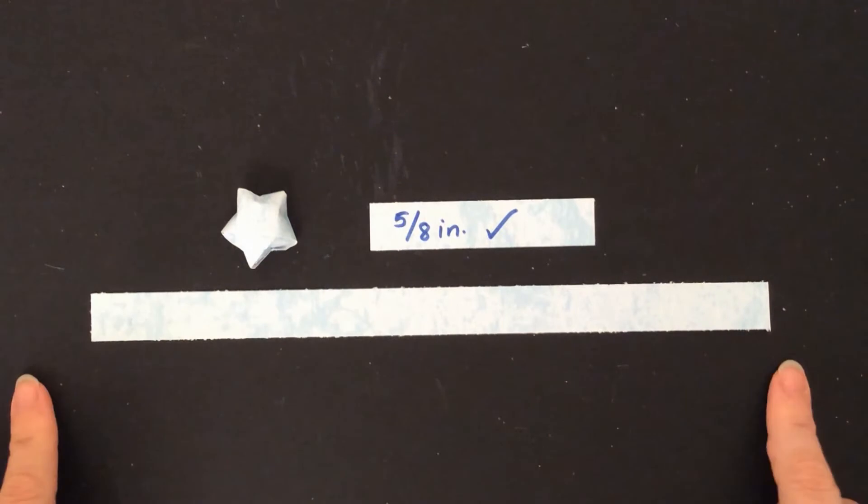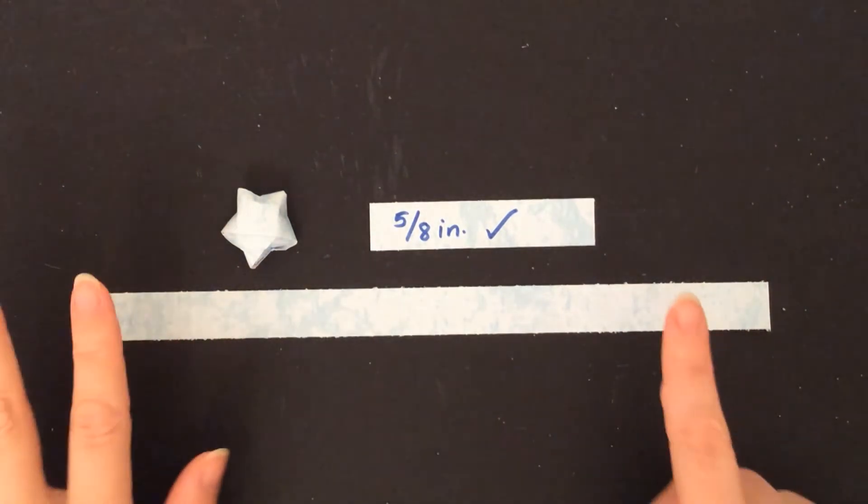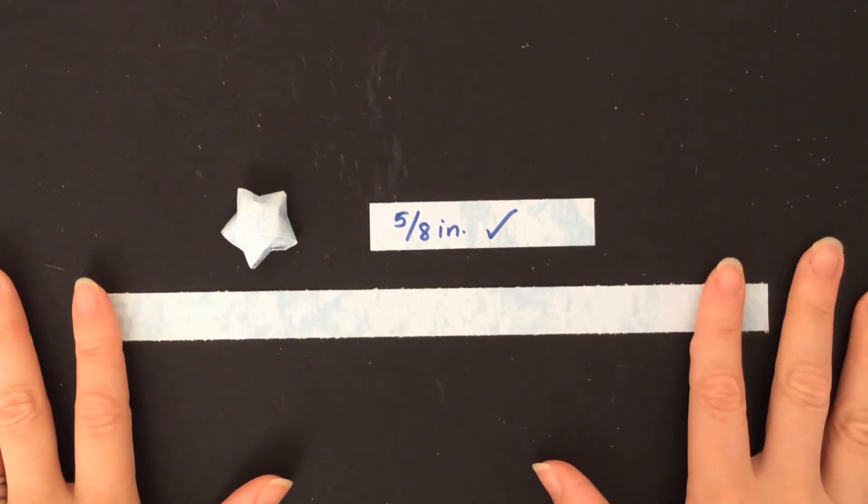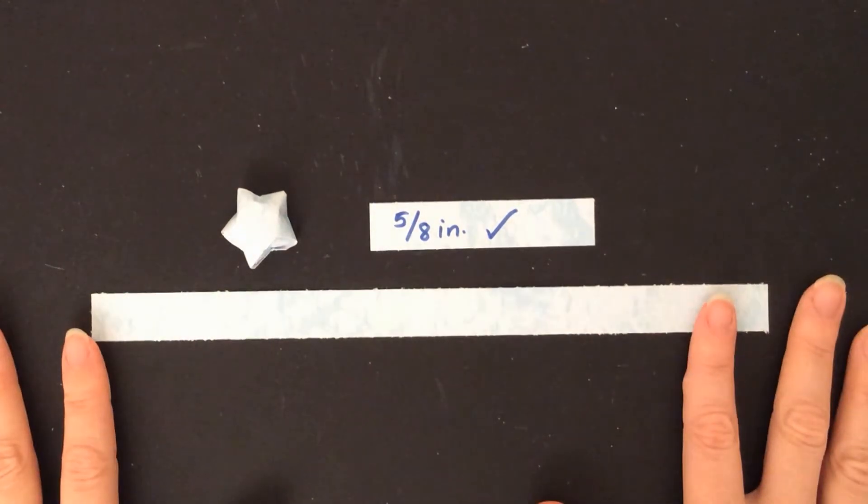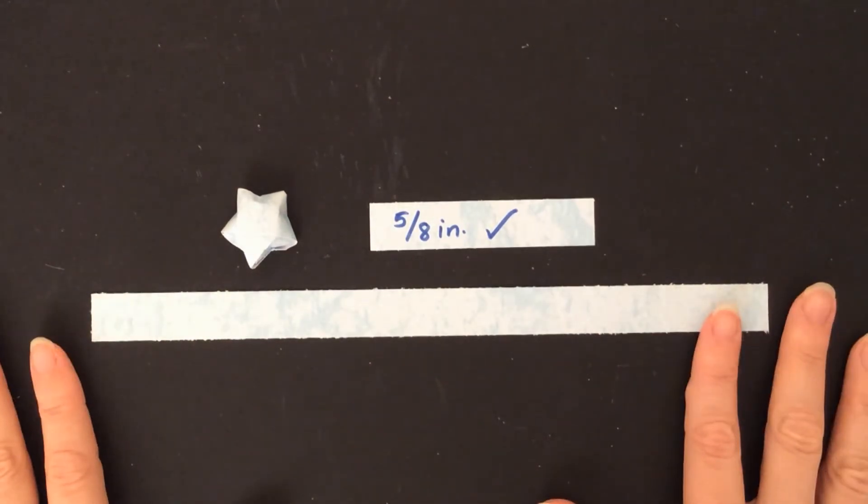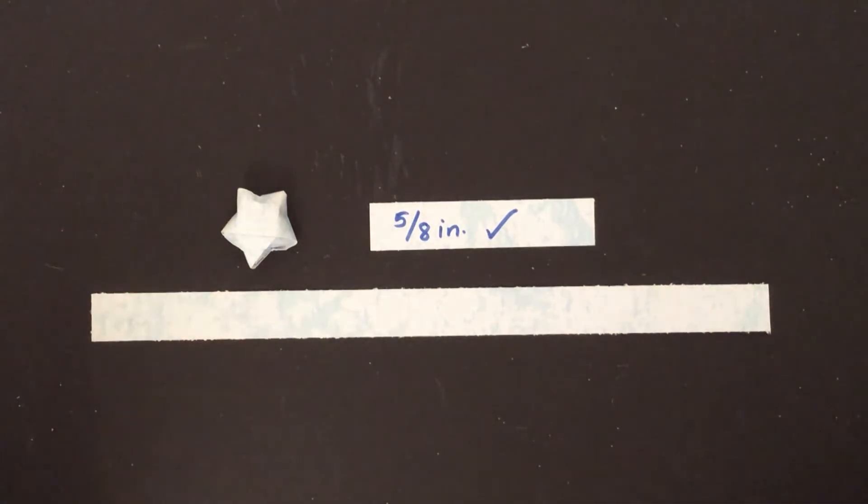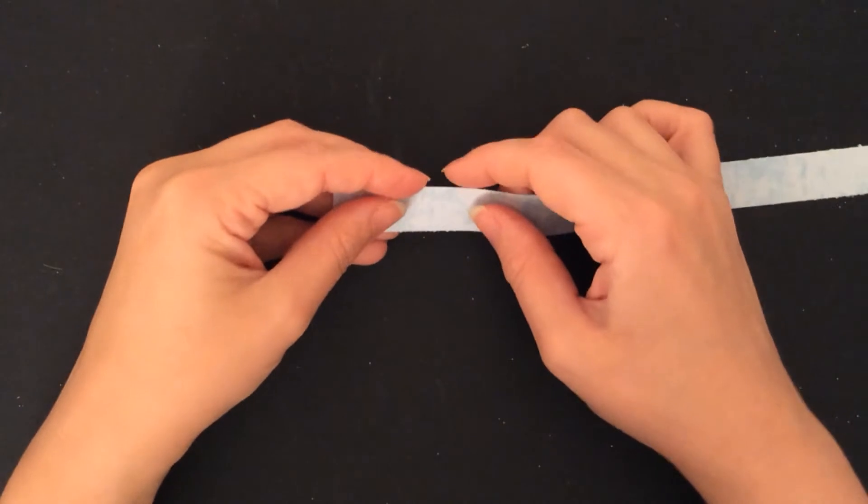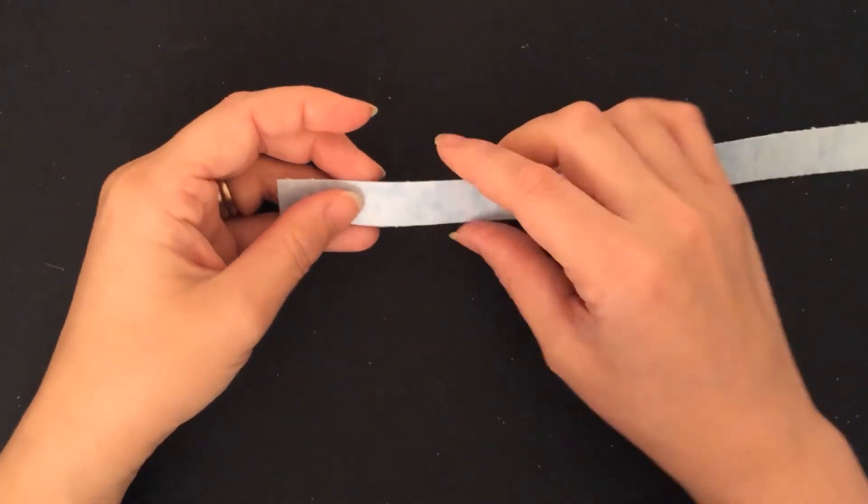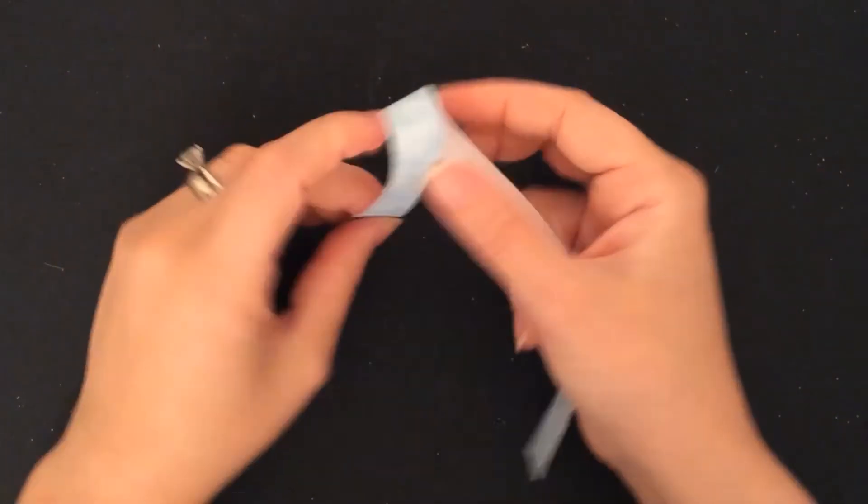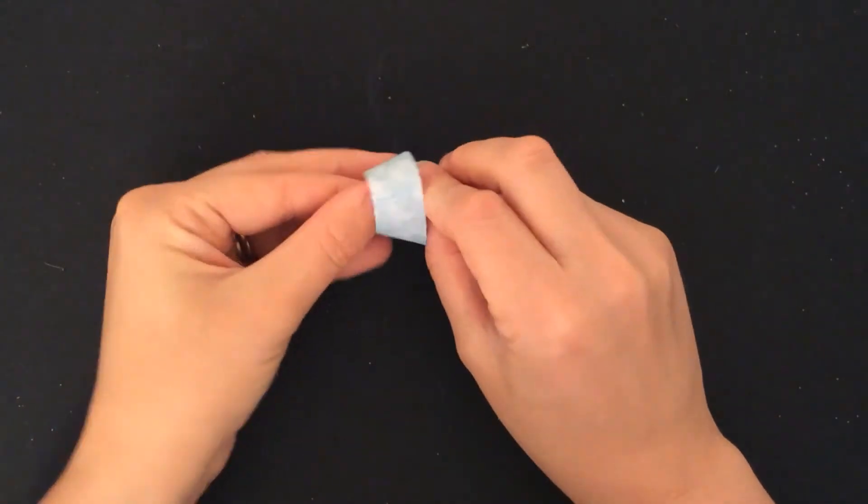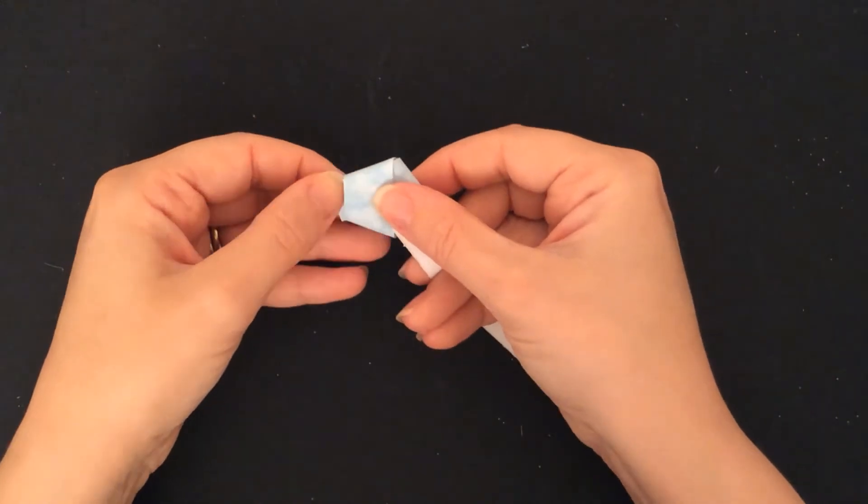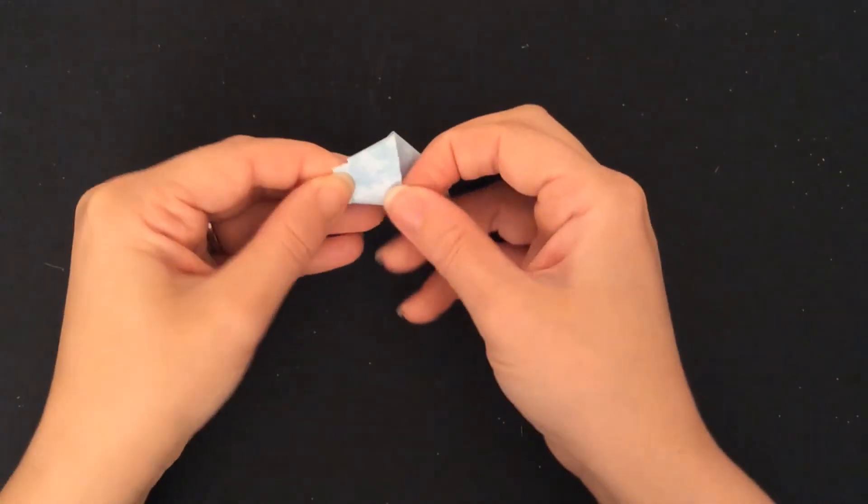And this is just scrapbooking paper, so any copy paper weight paper or lighter will work for this. I wouldn't suggest using cardstock. It's just not going to be very effective. You could, but it's just going to be harder to work with. So the first thing you need to do in order to make your star is to tie an overhand knot in the end of the paper, which sounds very silly, but it's very, very effective.